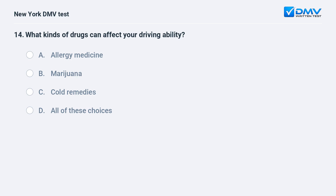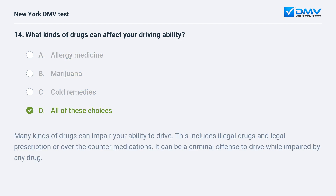What kinds of drugs can affect your driving ability? A. Allergy medicine. B. Marijuana. C. Cold remedies. D. All of these choices. The answer is D: All of these choices. Many kinds of drugs can impair your ability to drive, including illegal drugs and legal prescription or over-the-counter medications. It can be a criminal offense to drive while impaired by any drug.